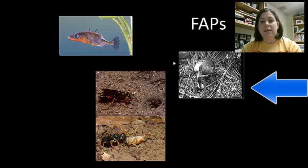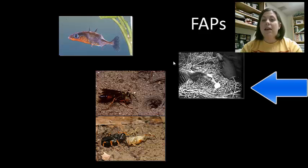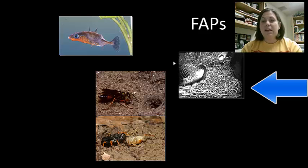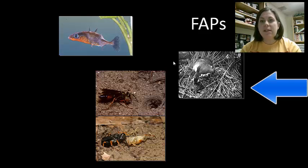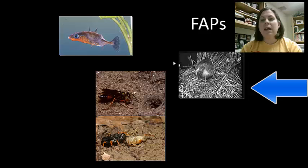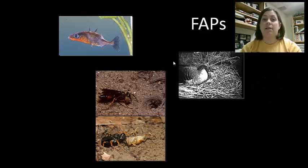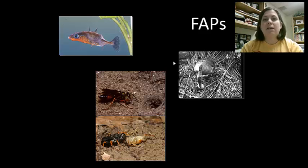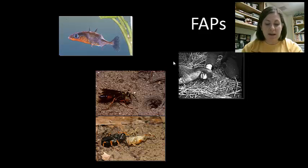Egg rolling in geese is another example. When an egg is removed from a goose's nest, it will roll it back in using its beak and neck. But even though the goose is no longer rolling an egg, it has to complete the rolling action all the way back to the nest. I consider this more of an OCD-type behavior — they have to do it all the way to completion. This is what we call FAPs.